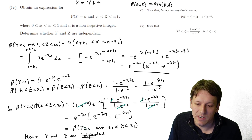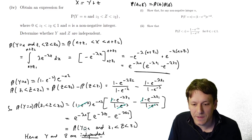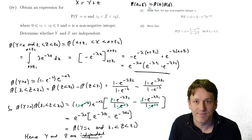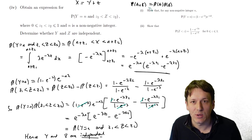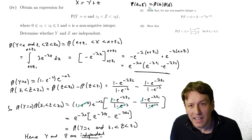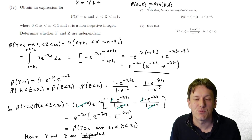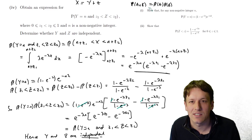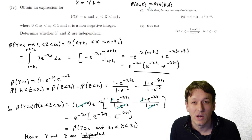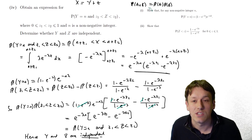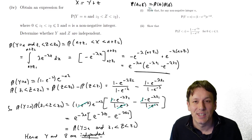STEP problems are incredibly difficult, and this is a tough problem with a lot of algebra to work through. But I do think the complexity of the algebra is slightly less for the probability and statistics questions, so if you have a good grasp on probability, these are probably more straightforward than the really hard pure questions.